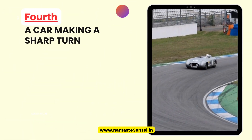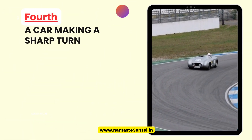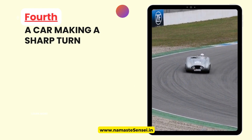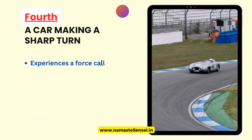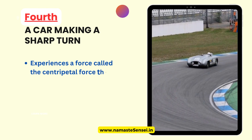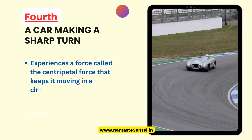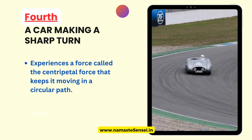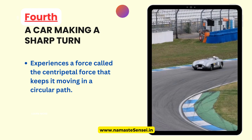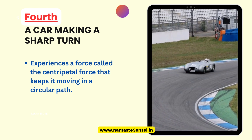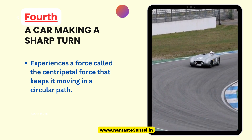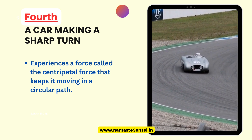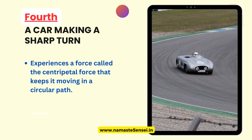Fourth, A Car Making a Sharp Turn. When a car makes a sharp turn, it experiences a force called the centripetal force that keeps it moving in a circular path. This force causes the car to slow down, or experience a change in tangential velocity as it turns.